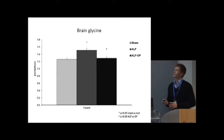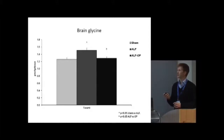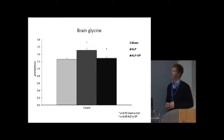This graph shows tissue levels of glycine from the frontal lobe at time 8. We found a significant increase in glycine levels in the acute liver failure animals compared to sham. Furthermore, we found a significant attenuation in glycine levels in the OP-treated animals compared to acute liver failure placebo animals.